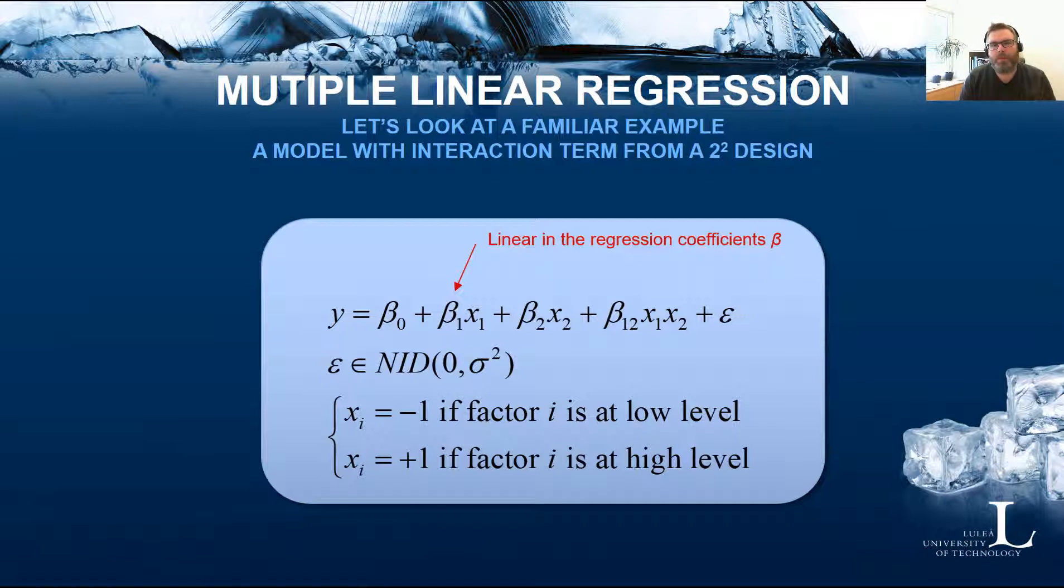These beta coefficients are typically estimated by the method of least squares. In this model assumption you have Y which is the response. We have beta 0 which is the intercept, beta 1 for the first factor, beta 2 describes the relationship with the second factor and beta 12 the relationship with the interaction term.